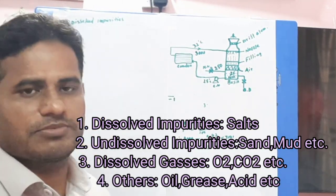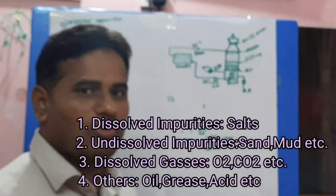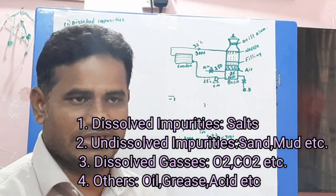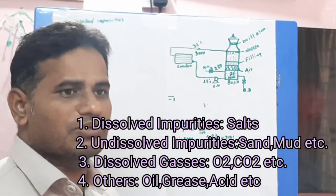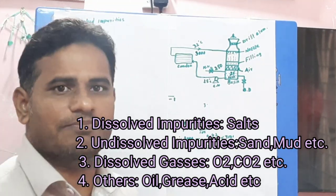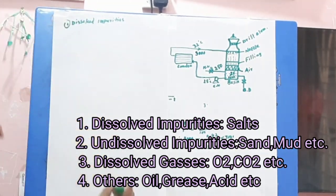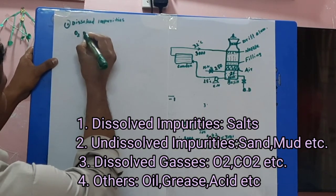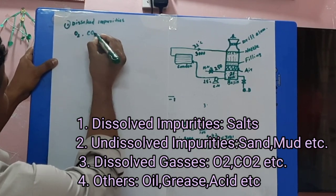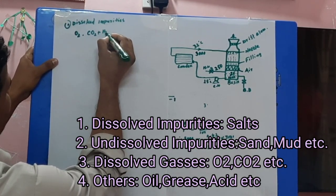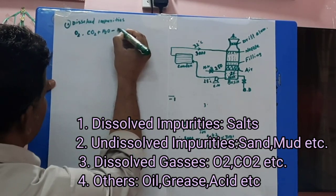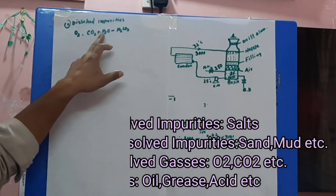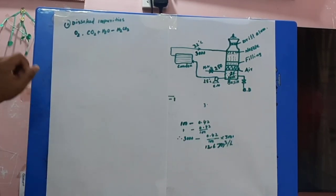These four types of impurities need to be removed. The first problem that can happen is corrosion. If oxygen and carbon dioxide are present in the water as dissolved gases, corrosion is possible. When carbon dioxide reacts with water, it creates carbonic acid, H₂CO₃.